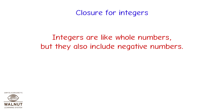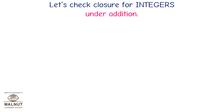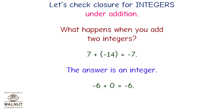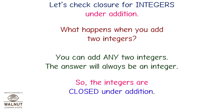Closure for integers. Integers are like whole numbers but they also include negative numbers. Let's check closure for integers under addition. 7 plus minus 14 is equal to minus 7 — an integer. Minus 6 plus 0 is equal to minus 6 — an integer. You can add any two integers and the answer will always be an integer. So integers are closed under addition.